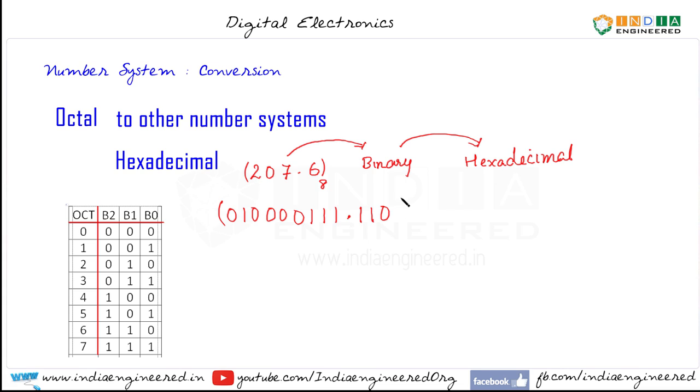Now what we have is the binary equivalent. Now all we need to do is convert into hexadecimal. For that we need to group them, group the binary digits into groups of 4.